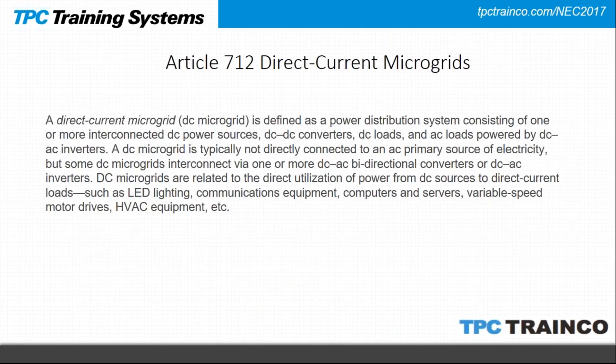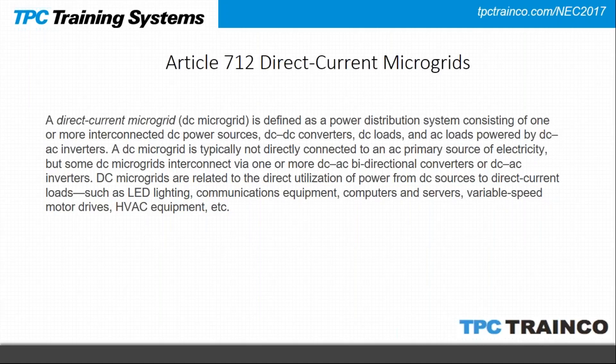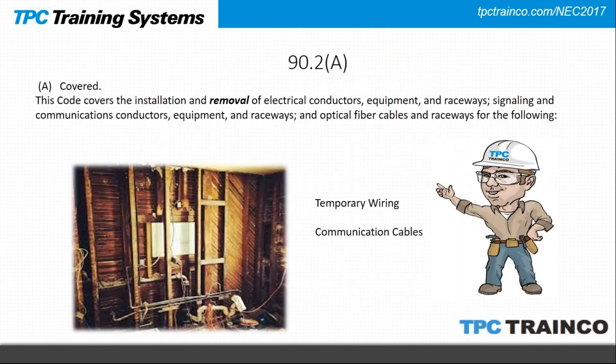For larger systems, we need a way to distribute the energy we produce. Article 712 gives us the DC microgrid — a power distribution system consisting of one or more interconnected DC power sources. We could have converters, DC loads, and AC loads. Typically this type of grid will supply DC power for lighting, communications, computers, or drives. So now we have a way to produce electricity, store it, and distribute it.